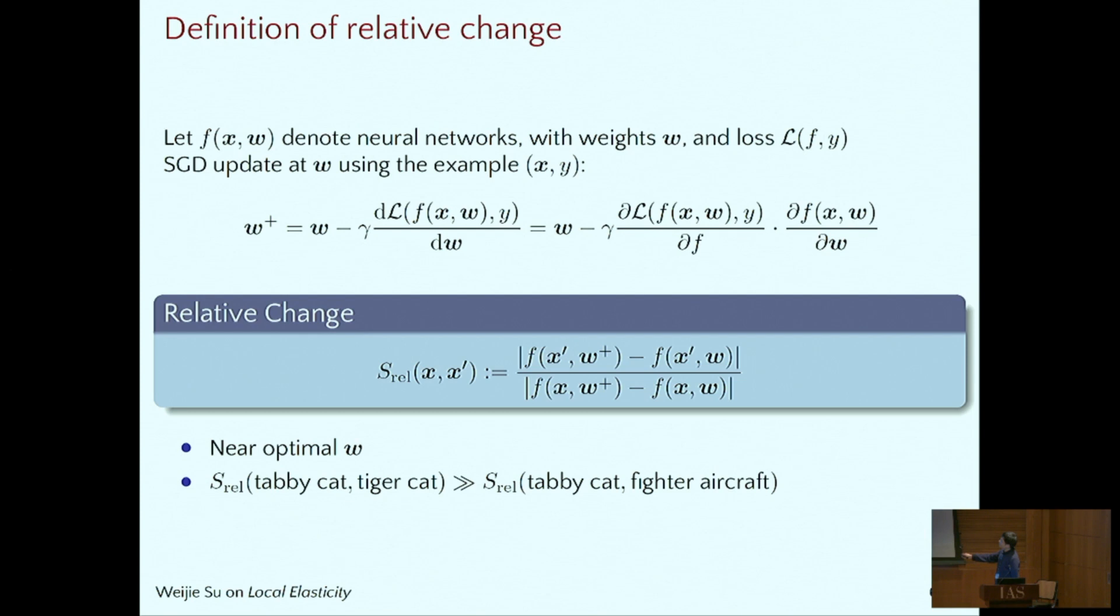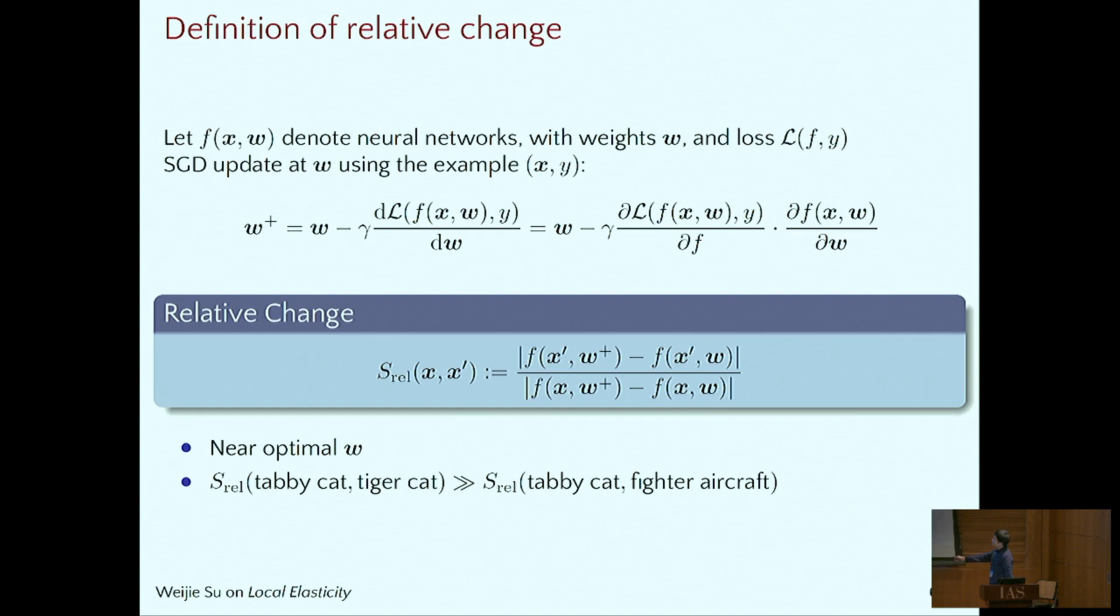Now let's define the relative change. W is the weight, and the update at X gets W prime. This is the relative change. The numerator is the difference of the prediction for X prime. Let's say it's the plane. And the denominator is the change at the original X, the tabby cat. And let's consider the ratio. The definition depends on the width. Our simulation shows that it would be best if the W is almost optimized instead of the random initialized weights.